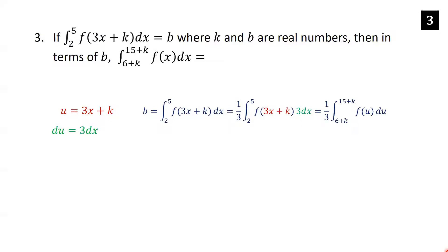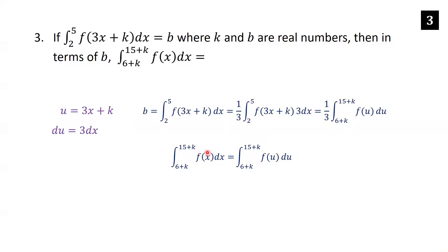We also change the limits: when x is 2, u is 3 times 2 which is 6 plus k; when x is 5, u is 15 plus k. So we have the integral from (6+k) to (15+k) of f(u) du — we can rename u to x since it's a dummy variable. Bringing the one-third to the other side by multiplying by 3, the answer is 3b.